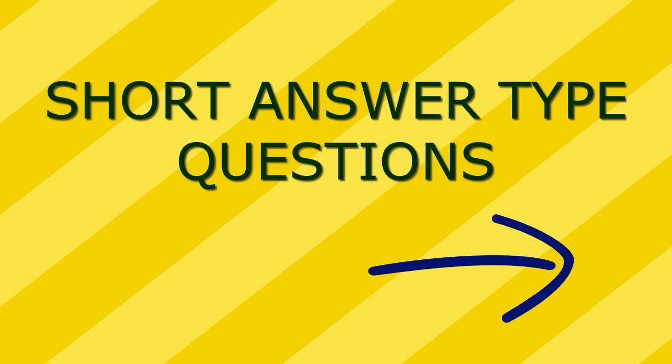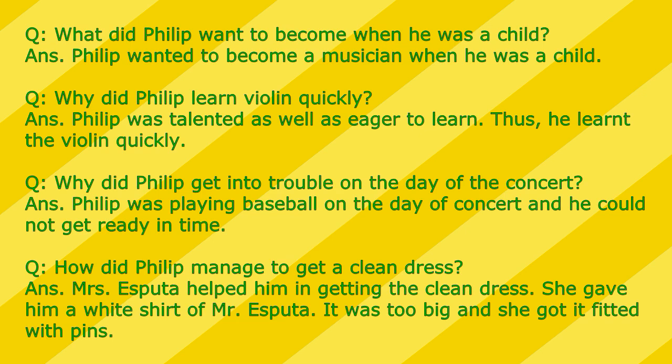Now the short answer type questions. First: What did Philip want to become when he was a child? Philip wanted to become a musician when he was a child. Why did Philip learn violin quickly? Philip was talented as well as eager to learn. Because of his talent and eagerness to learn, he learned violin quickly.